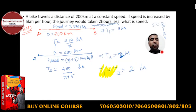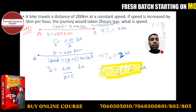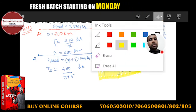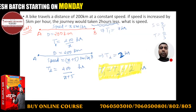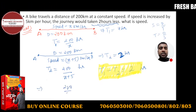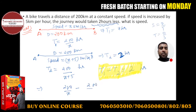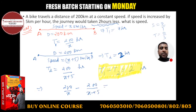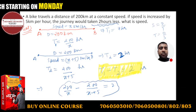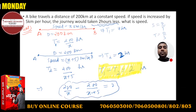If we do T1 minus T2, we get 2 — this is the main important part. So T1 minus T2: 200 upon x minus 200 upon x plus 5 is equal to 2. This is what we have to solve for x.